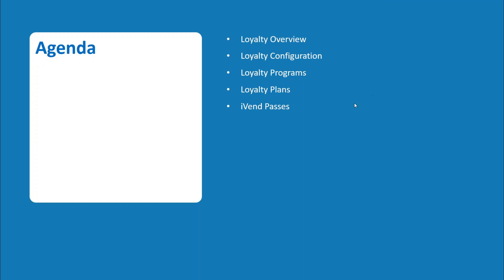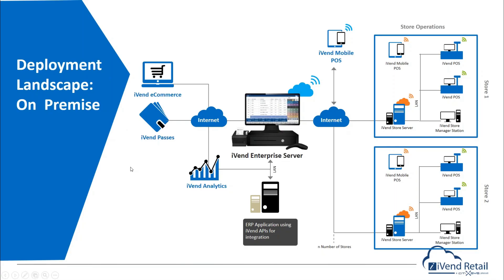Let's have a quick look at the loyalty overview. I have my handy dandy view of the deployment landscape. This is one of my favorite slides because it does explain everything wonderfully about iVend, including one thing that you might have noticed is missing — iVend loyalty. And the reason is very simple: iVend loyalty is completely integrated end to end, from e-commerce to POS, from iVend passes to mobile POS, store to enterprise. It's all through the whole system. It's everywhere.